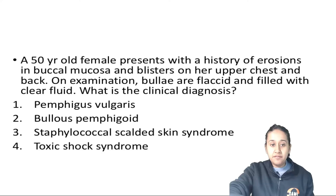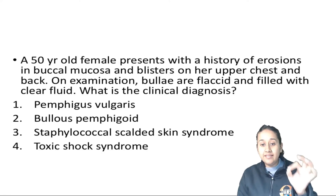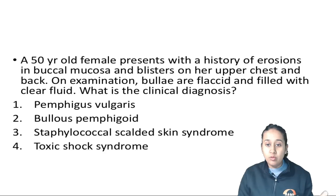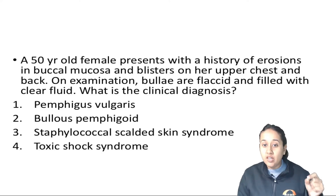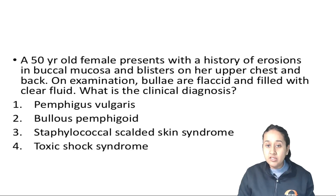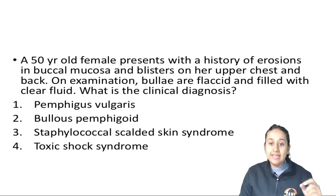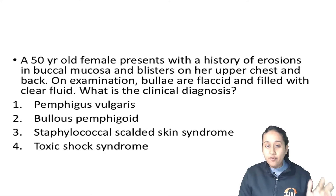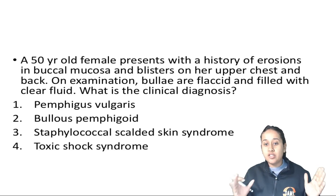Here is the question — the type you most often get from vesiculobullous disorders. A 50-year-old female presents with a history of erosions in the buccal mucosa and blisters on her upper chest and back. On examination the bulla are flaccid, filled with clear fluid. What is the clinical diagnosis? Options: (1) Pemphigus vulgaris, (2) Bullous pemphigoid, (3) Staphylococcal scalded skin syndrome, (4) Toxic shock syndrome.